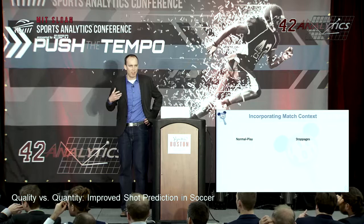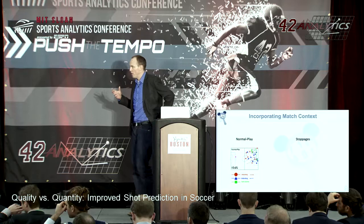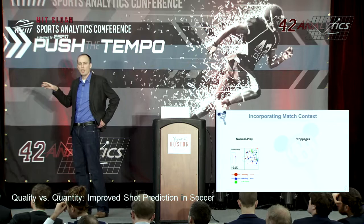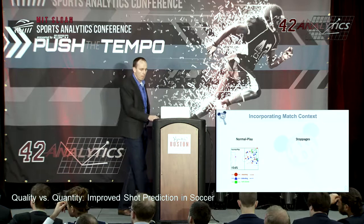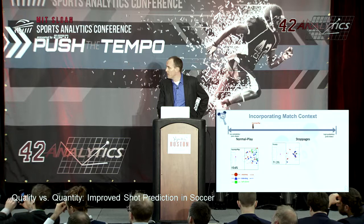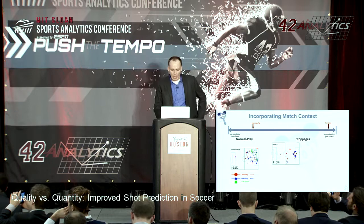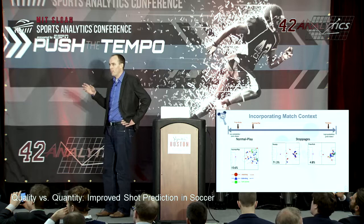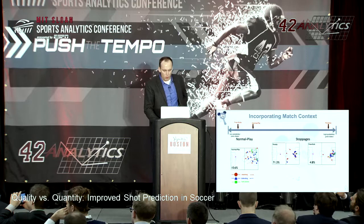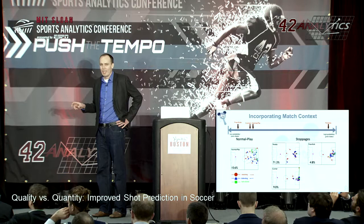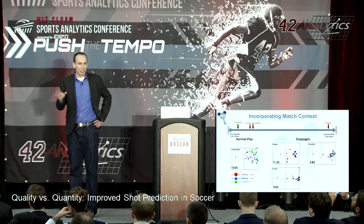If we incorporate match context, we can do better. We have in-play — just normal continuous play — where the expected goal value is about 10.6%. In the visualizations, the red team attacks left to right, the blue team defends right to left, and green markers denote ball actions. We also have stoppages and penalties. In the season we analyzed, 71.3% of all penalties ended up in a goal — that's contextual information we should use. On the flip side, only 5% of direct free kicks ended up in a goal, and 9% of shots from corners ended up in a goal.